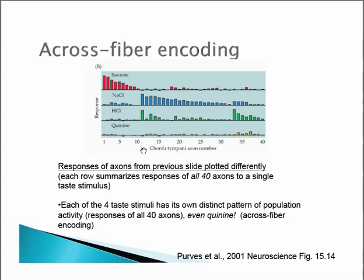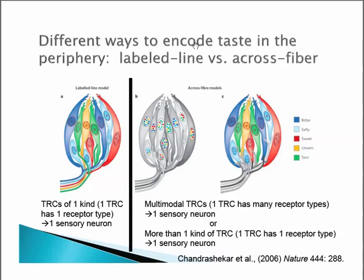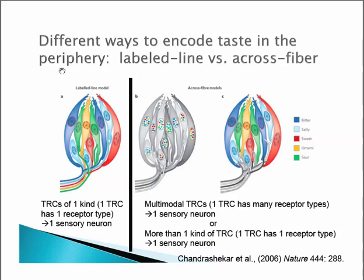So what is the mechanism underlying cross fiber encoding, and what are the mechanisms underlying labeled line encoding? What's actually happening at the molecular level? Going back to different ways to encode taste in the periphery — for labeled line encoding, this essentially means we have taste receptor cells of only one kind. The taste receptor cell expresses only one type of taste receptor, and it synapses ultimately onto one type of sensory neuron. These are the gustatory afferent axons 1 through 40. This is a very simple model for labeled line.